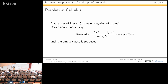Proof in ordered resolution works with clauses—a set of literals, which are atomic propositions or their negations. You apply the resolution rule: if you have a clause with literal P and another with literal not-Q, and P and Q are unifiable, you generate a new clause C∪D applying the most general unifier of P and Q. You repeat until the empty clause is produced, which shows the initial clause set was unsatisfiable—and since the clause set comes from the negation of a formula, the original formula was provable.